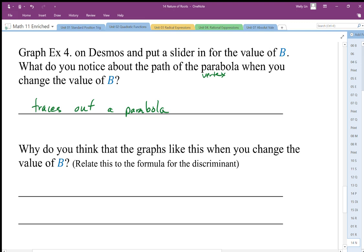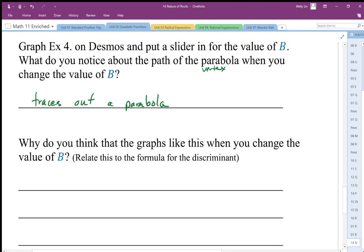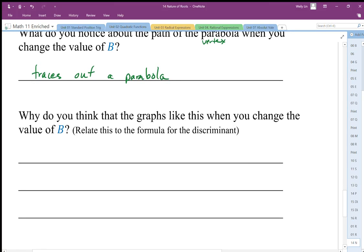Okay, so why? Why is the vertex of a parabola tracing out a path of a parabola? Well, when we look at, as we change the value of B, so we generalize B, the middle term, B squared minus 4 times AC.